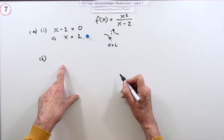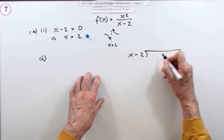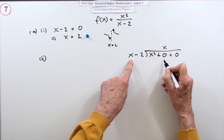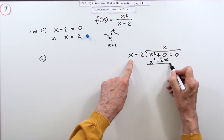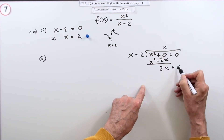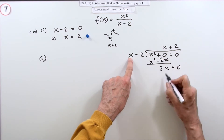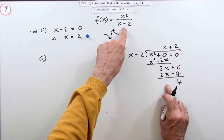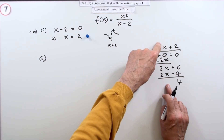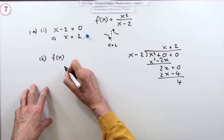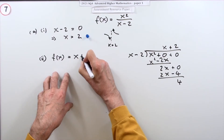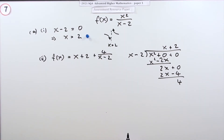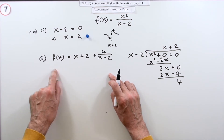To find the asymptote properly, rearrange by carrying out polynomial long division. Dividing x minus 2 into x squared: x times x gives x squared minus 2x; subtracting leaves 2x. Then 2 times (x minus 2) gives 2x minus 4, and subtracting gives a remainder of 4. So the division tells us f(x) equals x plus 2 with remainder 4 over (x minus 2).